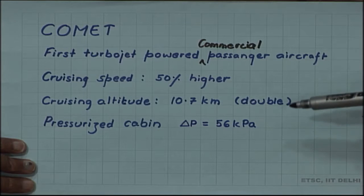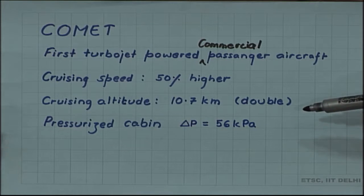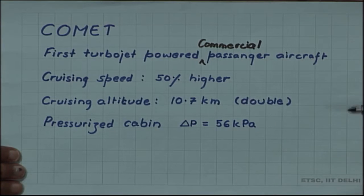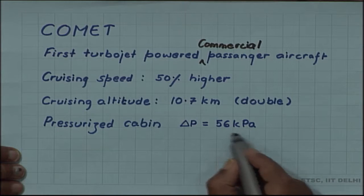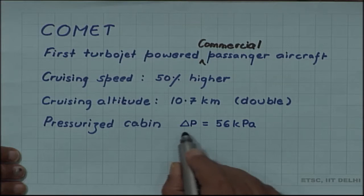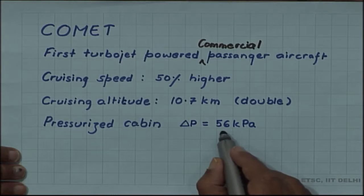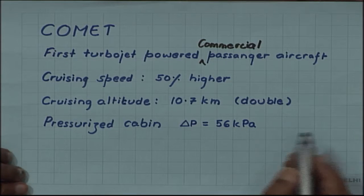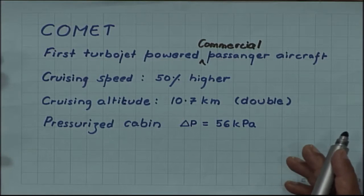Because the altitude was so high, at higher altitude the pressure will be very low, so the cabin pressure will go down. For the first time, pressurized cabins were introduced with a pressure difference between inside and outside of 56 kilopascals. This was to make oxygen available to passengers and keep them comfortable.